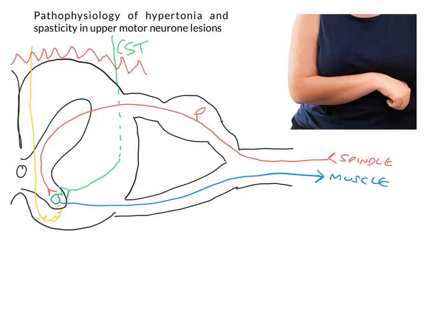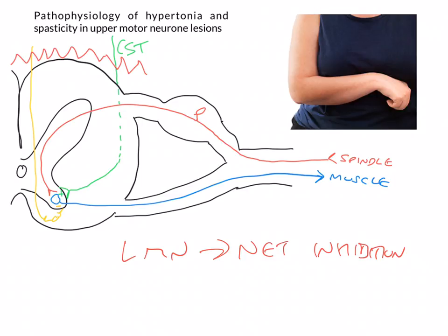So the take-home message is that we have net inhibition on the lower motor neuron normally. And if you take away that net inhibition, what you end up with is increased excitation, and that leads to increased muscle tone.